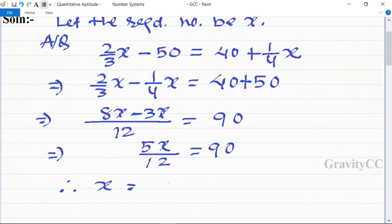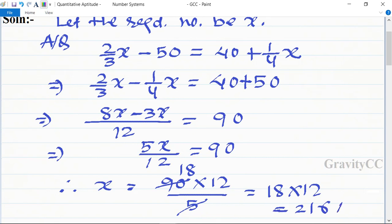is equal to 90 into 12 upon 5. So table of 5: 18 times 5 is 90, so 18 into 12 is equal to 216, which is the required answer.